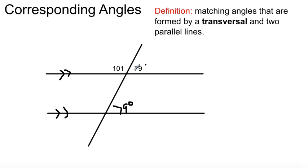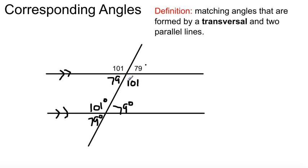Same thing again — this angle is the same as that angle: 101. Now this angle and that angle are opposite angles, so that's also going to be 101. And this angle here is the opposite angle, so it's 79. This angle, using the F pattern again, will be the same as this angle. So many ways you can find these angles — or you can say this angle is 101 by using the corresponding angle. Or you can say there's 180 here, this is 79, so what's left? 101.